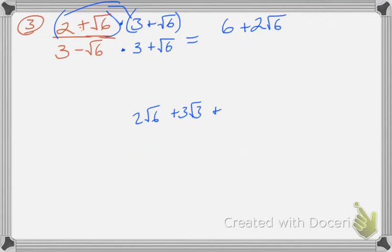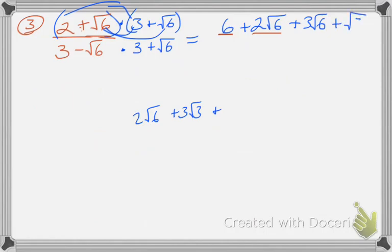So I still have 2 times 3 is 6. 2 times square root of 6 is 2 square root of 6. Then 3 times square root of 6 becomes 3 square root of 6. And square root of 6 times square root of 6 becomes plus square root of 36.